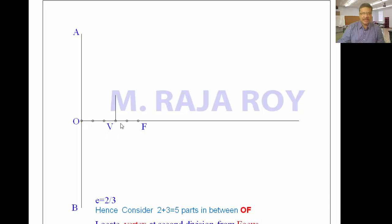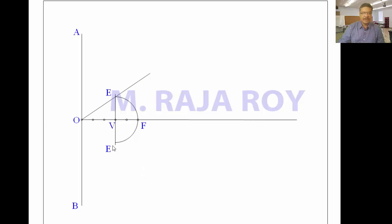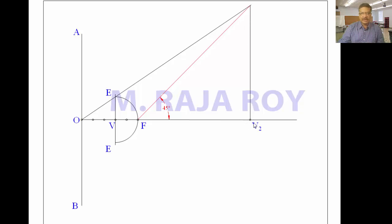At the vertex, draw a perpendicular to OF as shown here. Then take VF as radius with V as center and draw a semicircle. Call these intersection points as E and E. Draw a line joining O and E and extend it — this is the first vertex V1. To locate the other vertex V2, draw a 45-degree line from the focus. Where the OE extended line intersects this 45-degree line, drop a perpendicular — this gives the other vertex V2. After that, erase the 45-degree line.